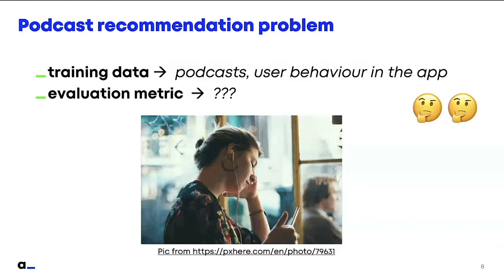So what about podcast recommendations? In this case we can think: what do we have as training data? We have data about the podcasts in our database — the podcast, the episode — and we also have the user behavior in the app. We track specific behaviors of the user in our podcast app. So that should be our training data, but the evaluation metric is not clear from the beginning. What shall a recommendation problem aim to improve? Which metric?